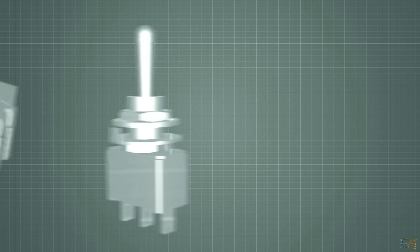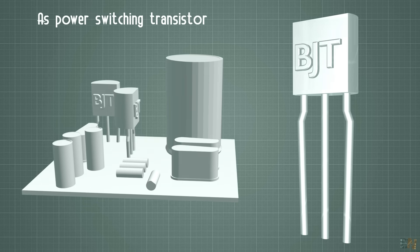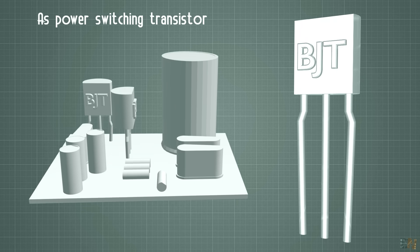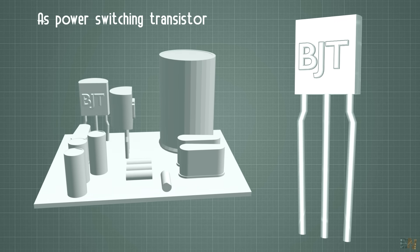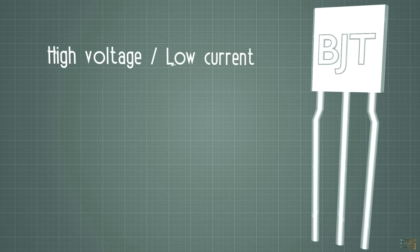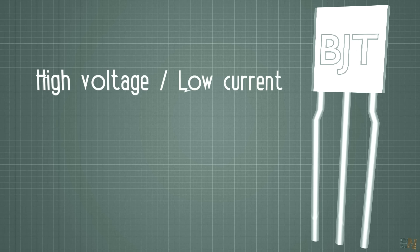What other differences do we have? For that, let's see their use as high power switching transistors. Since power is current times voltage, we have to look at the current and voltage capabilities. First, the BJT is considered to be a high voltage and low current device.